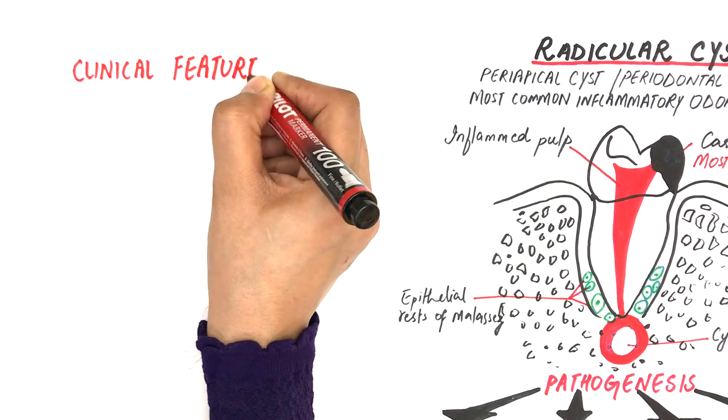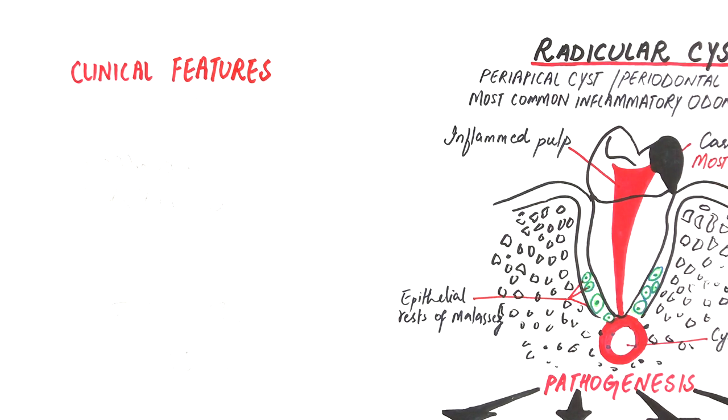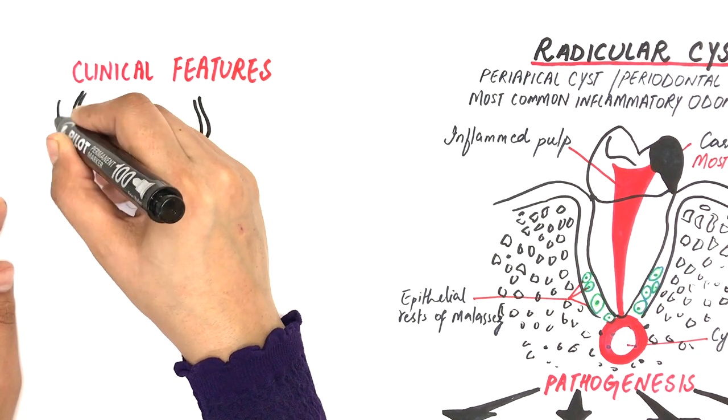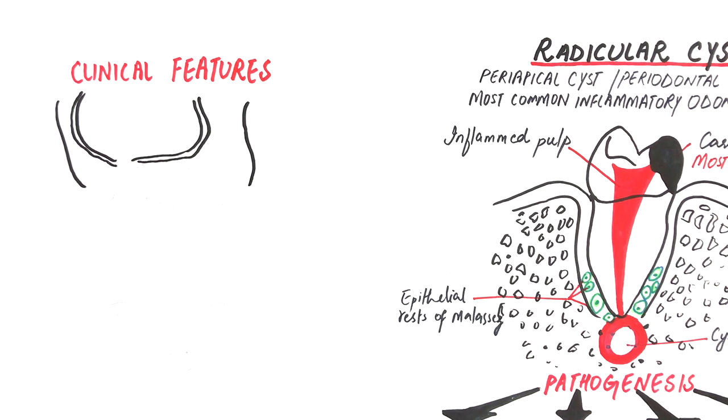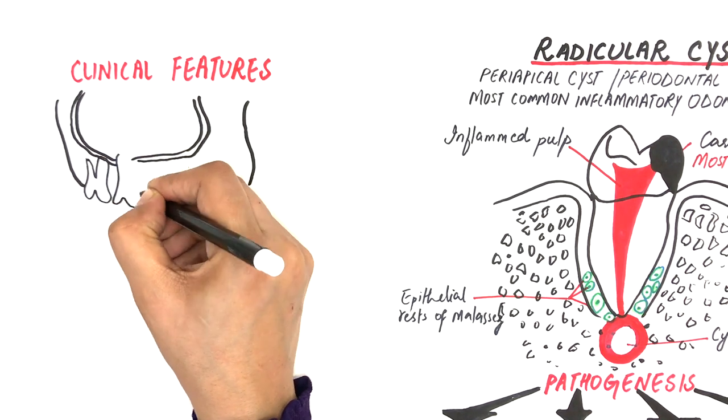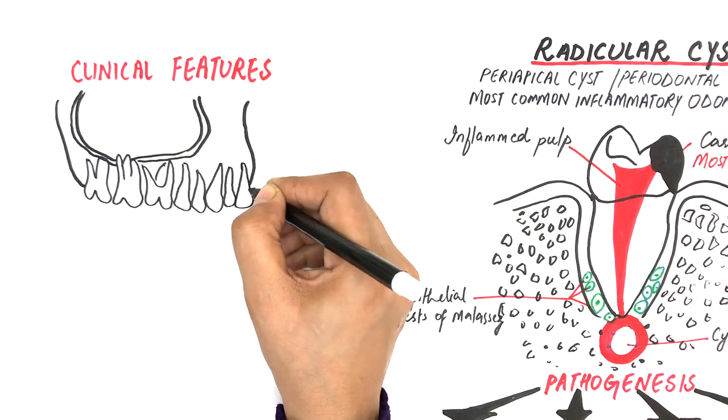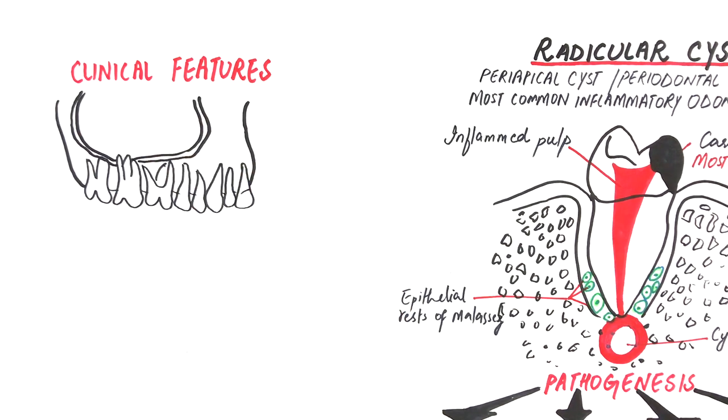Let's now talk about some clinical features of the cyst. In about 60% of all cases, radicular cyst most frequently affects the maxillary jaw with the maxillary molars being the most commonly involved teeth.